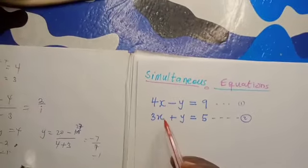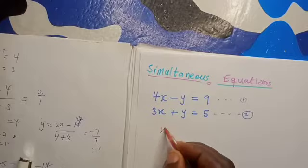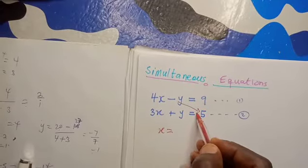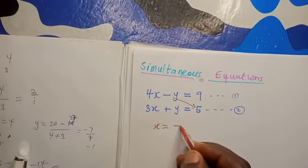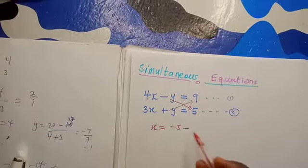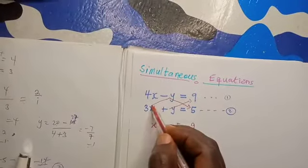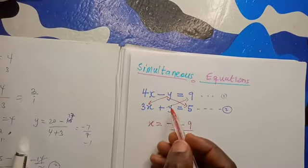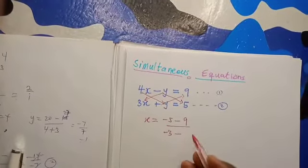So now we are going to find the value of x. We have x equals the coefficient here multiplied by this constant. Don't forget this minus, so minus 1 times 5 gives us minus 5, minus the coefficient here multiplied by 9 to give us 9, divided by this coefficient multiplied by 3 to give us minus 3, minus this coefficient multiplied by this, which will also give us 4.